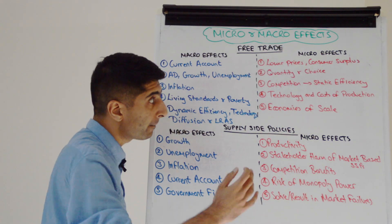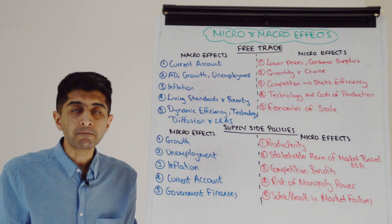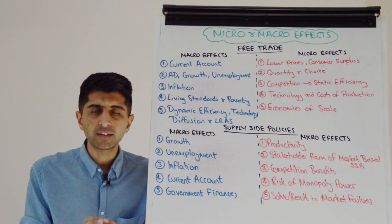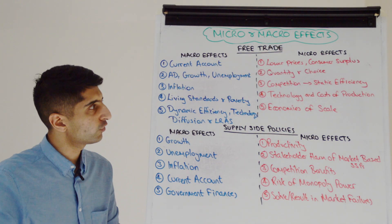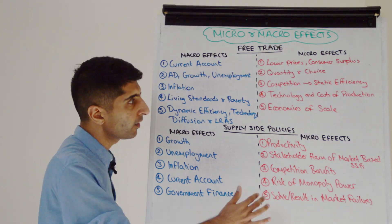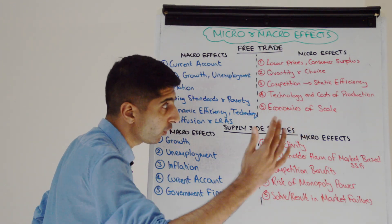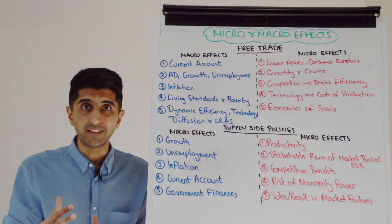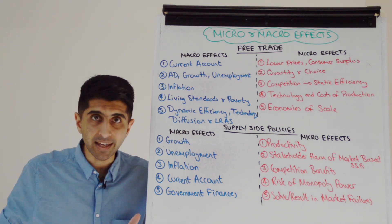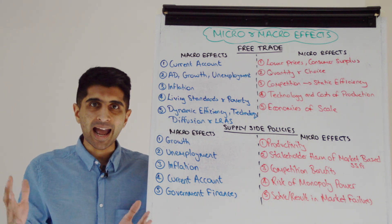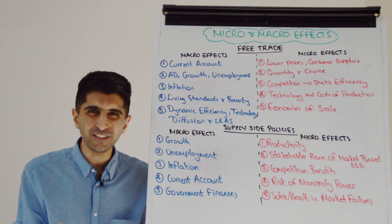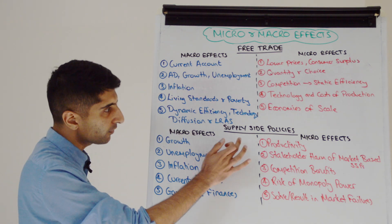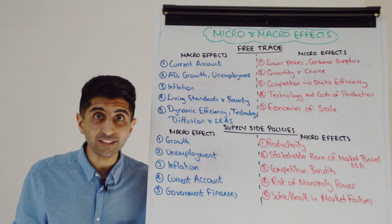We can talk about better technology — the micro impact of that lowering costs of production for firms. We can talk about economies of scale benefits as now firms get bigger, being able to access larger markets. Simple. And let's now look at supply side policies.